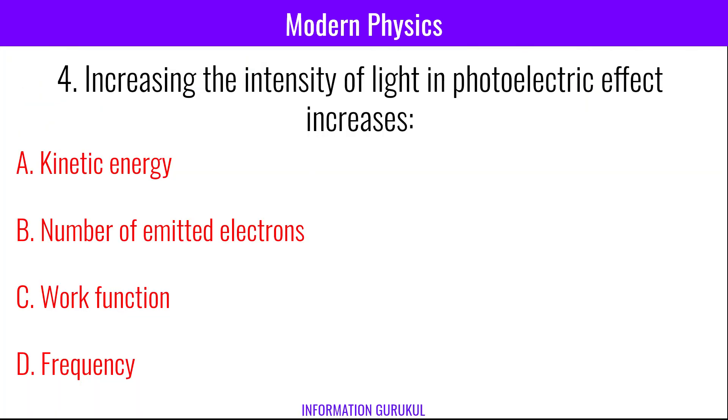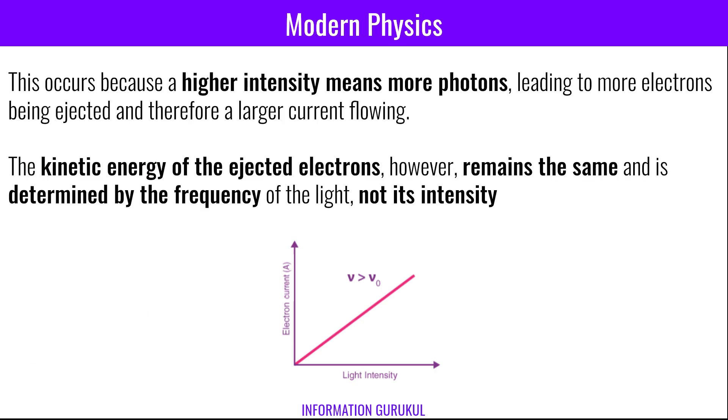Increasing the intensity of light in photoelectric effect increases number of emitted electrons. This occurs because a higher intensity means more photons, leading to more electrons being ejected and therefore a larger current flowing. The kinetic energy of the ejected electrons, however, remains the same and is determined by the frequency of the light, not its intensity.